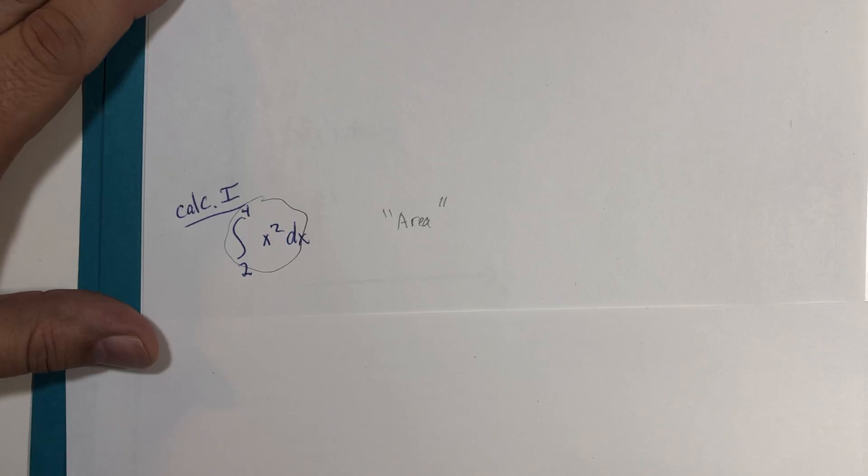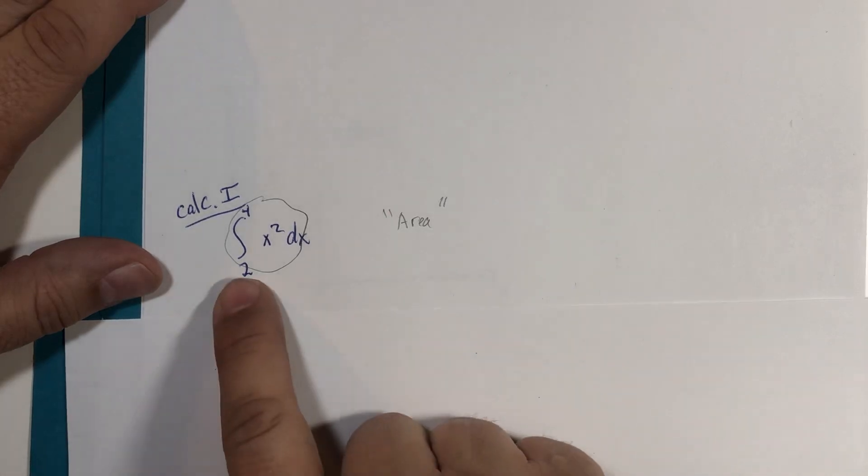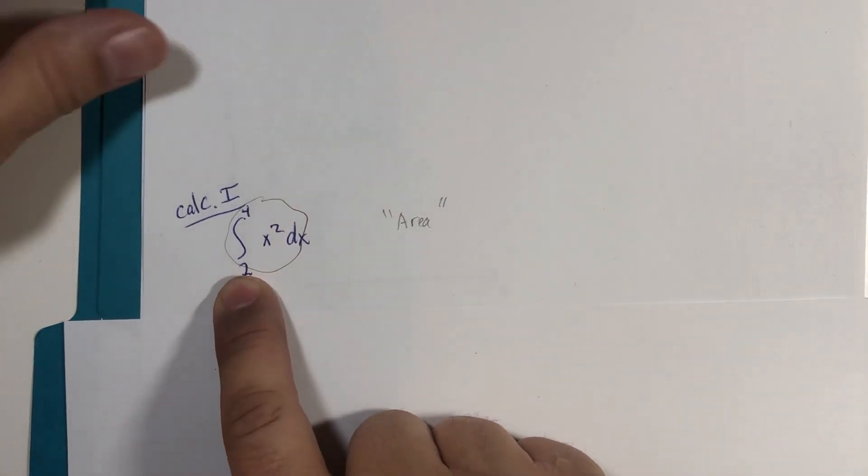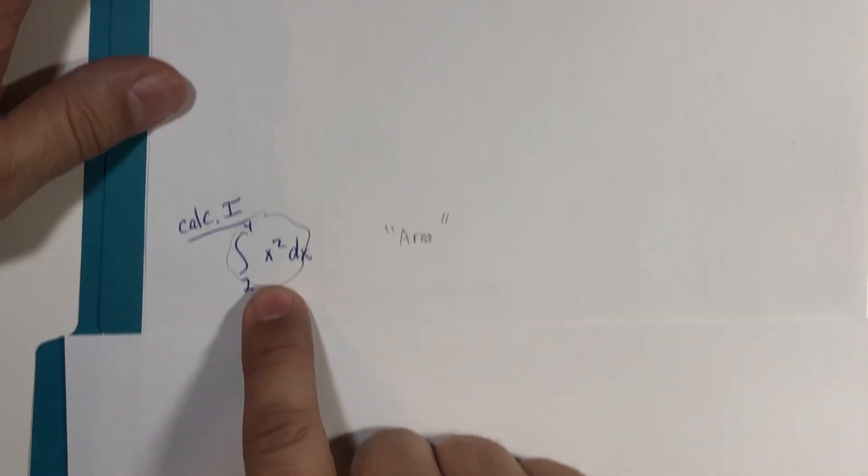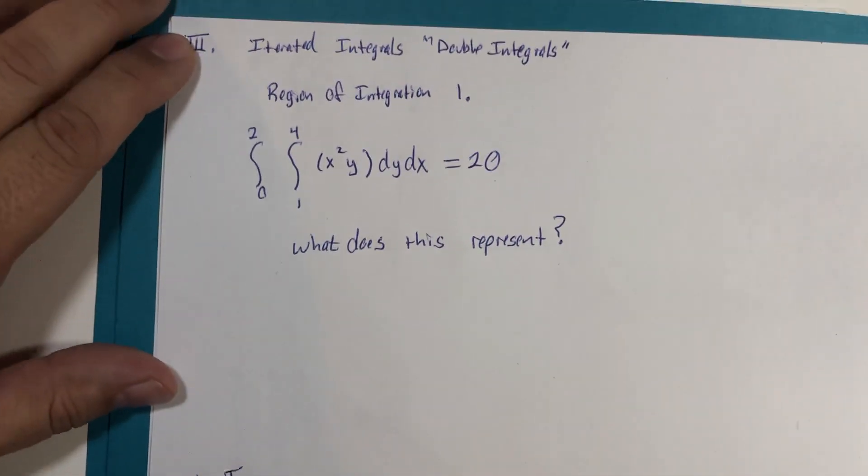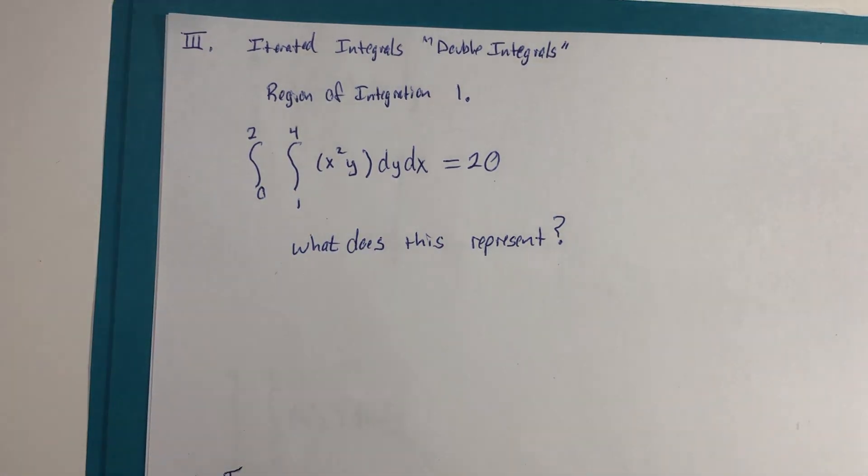We later learned that it could measure many expressions. We found volumes of different types of rotations and moments and centers of mass and work and surface area and arc length. I mean, if you can find a way to add up small pieces, this is the ultimate adding machine. So let's just go back here. If this was area, what might you guess is the meaning of that double integral?